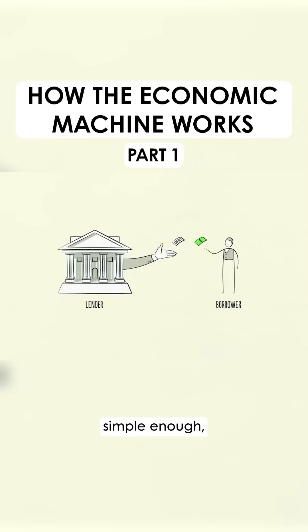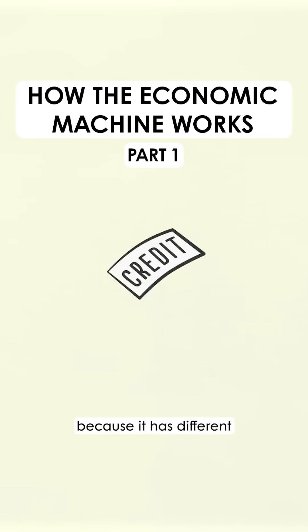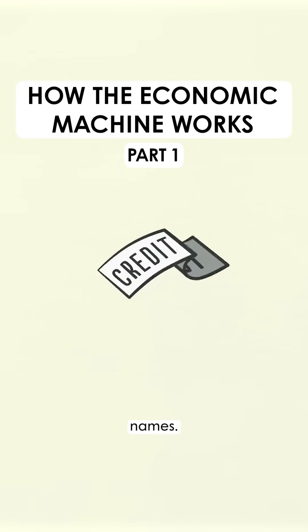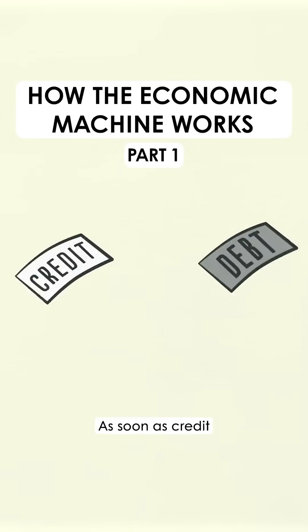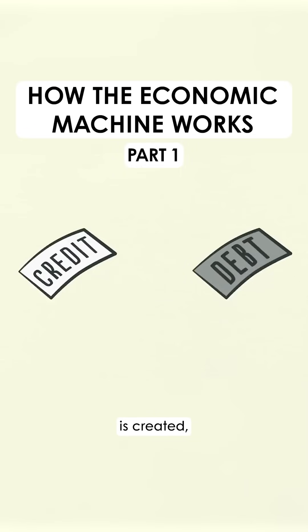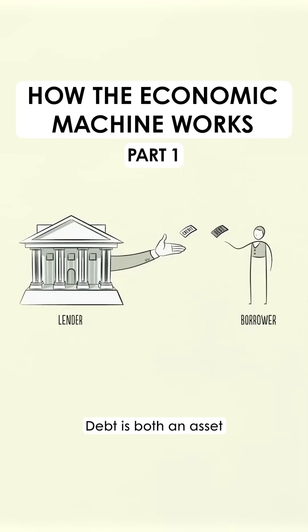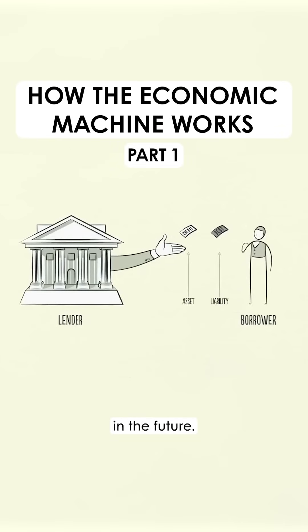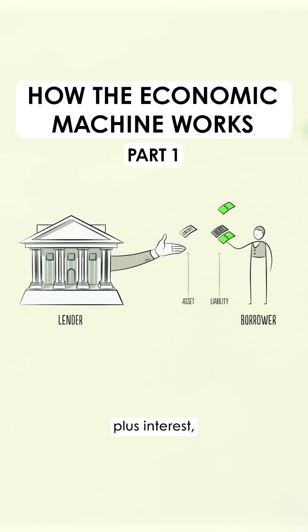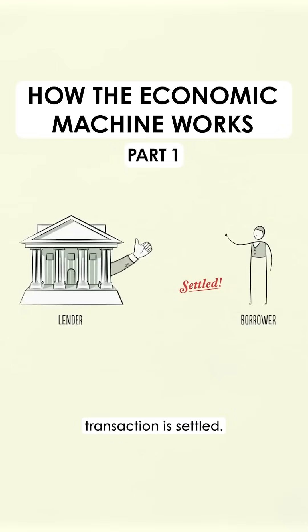Debt is both an asset to the lender and a liability to the borrower. In the future, when the borrower repays the loan plus interest, the asset and the liability disappear and the transaction is settled.